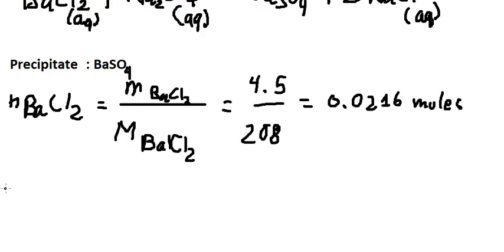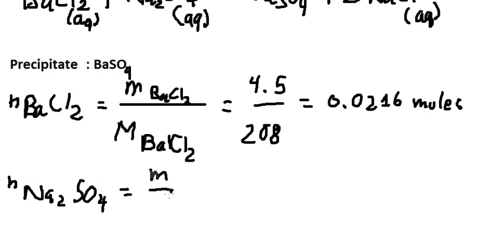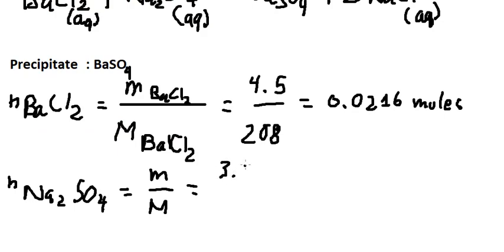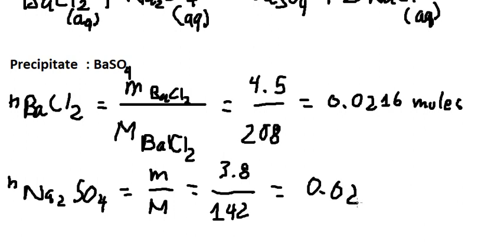Next, we need to find the moles of sodium sulfate. We do the same — the mass of sodium sulfate is 3.8, and the molar mass of sodium sulfate is 142. So we calculate this and we get 0.027 moles.